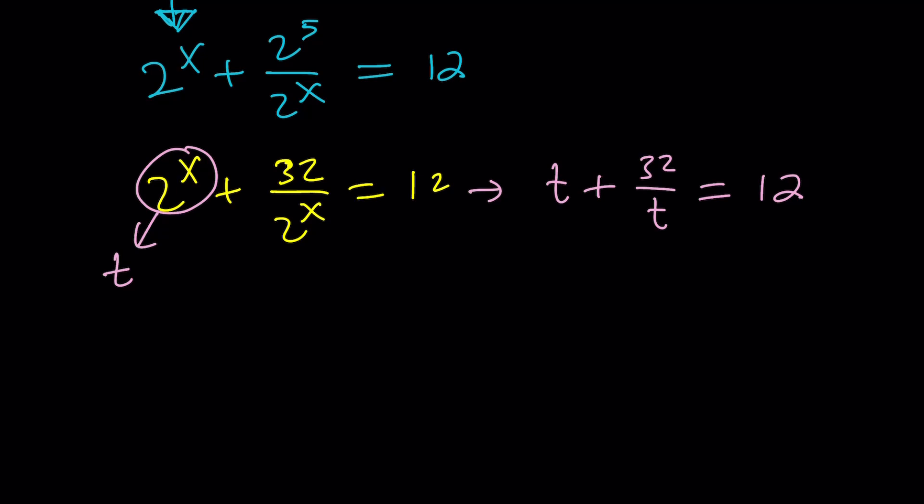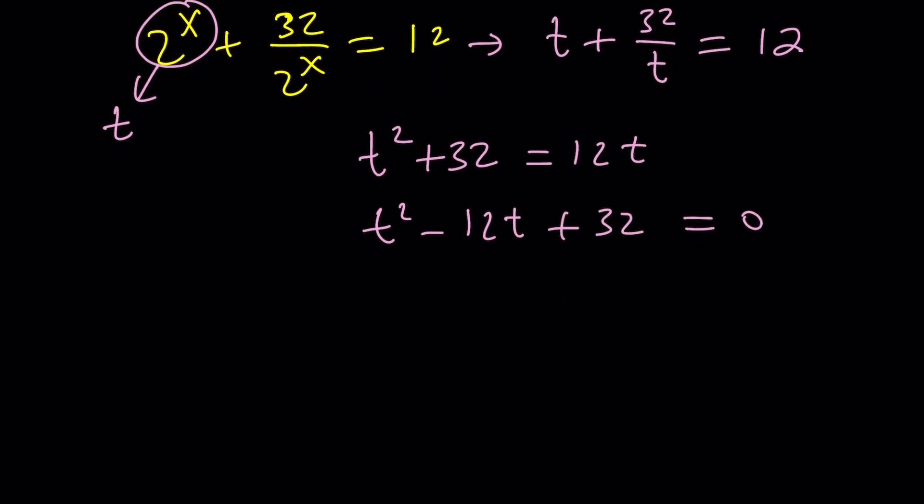Let's go ahead and multiply everything by t so we can get rid of the fraction. t squared plus 32 equals 12t. Put everything on the same side. And you'll get this equation. This is quadratic. You can use the formula if you want. But this is factorable. And this can be factored as t minus 4 times t minus 8 equals 0. Factoring trinomials is an important concept. Maybe we'll make a video about that too. But just remind me if I forget.